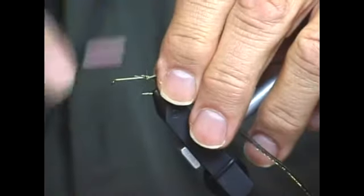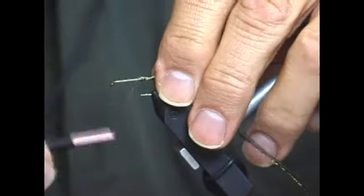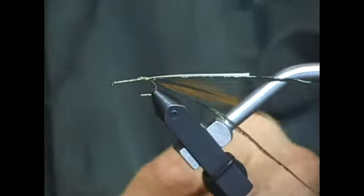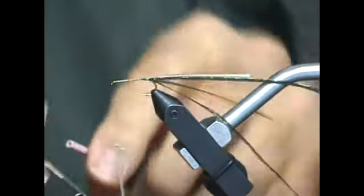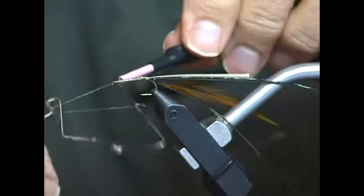Now we're going to move the tie-in thread forward up the hook shank to just behind the hook eye and we're going to secure it there with a whip finisher, but only use two wraps.